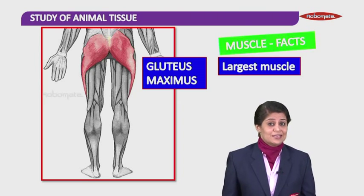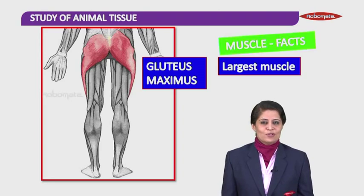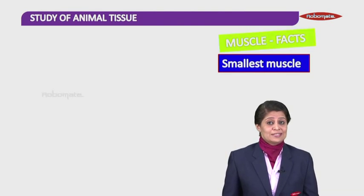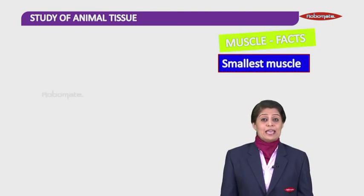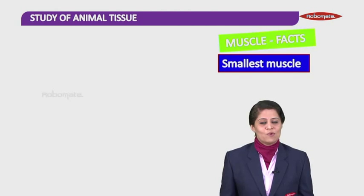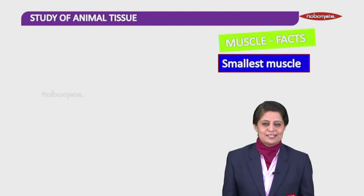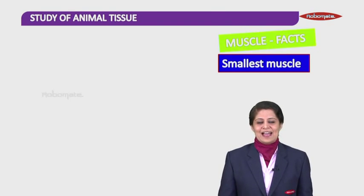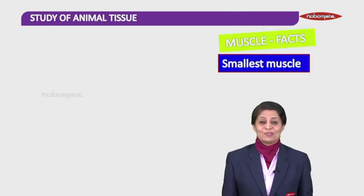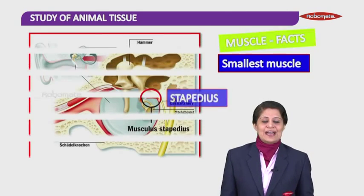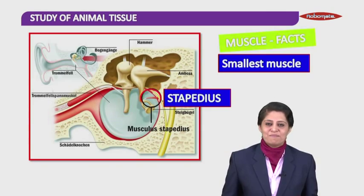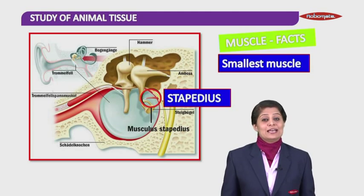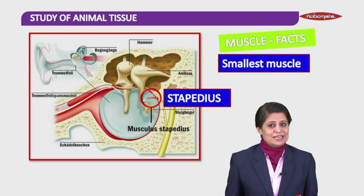When we know the largest muscle, we should also know which is the smallest muscle of your body. The smallest muscle is attached to the smallest bone of your body. Where exactly is the smallest bone? In your ear. The smallest muscle is attached to the bone called stapes, that's why it's known as stapedius. It's present in your ear — a very small, tiny little muscle.